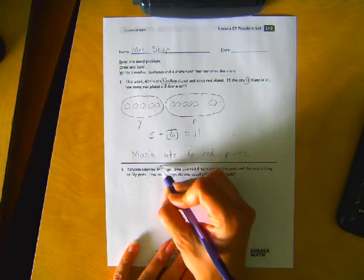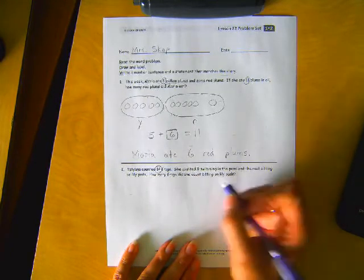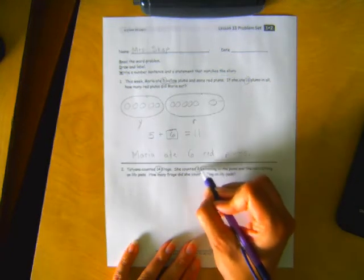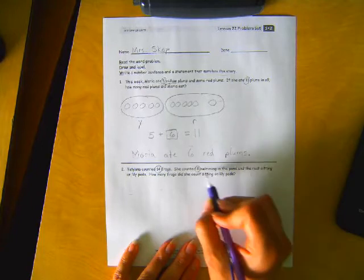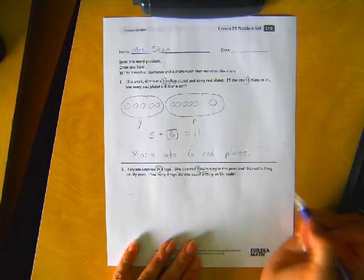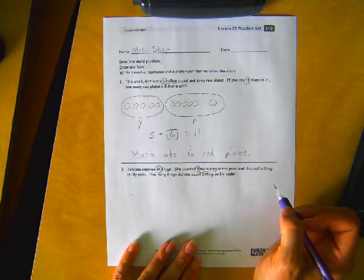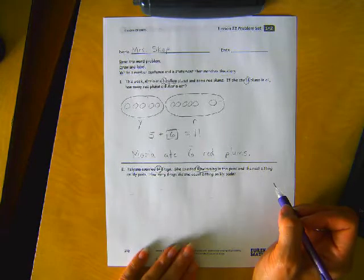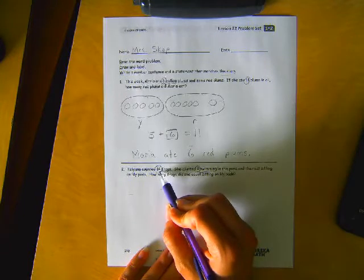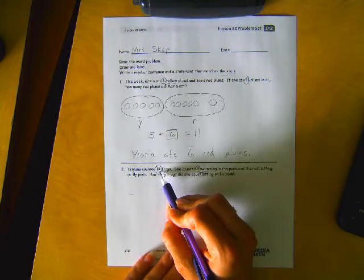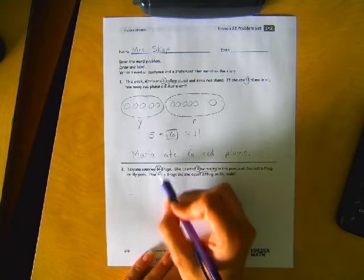Well, we know there's 14 frogs. And then there's eight swimming in the pond, which means the rest are sitting on lily pads. So first, we draw how many frogs there are in all, which is 14.